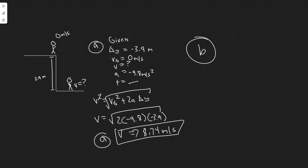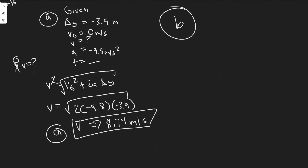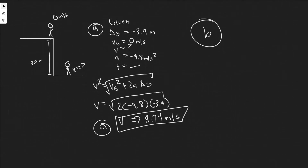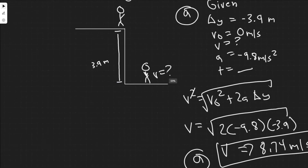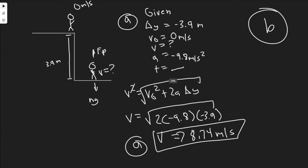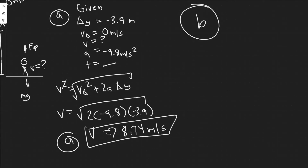Now let's move on to Part B, which asks us to find the average force exerted on his torso by his legs during deceleration. The first thing we want to do is draw the free body diagram of what's going on. We have the force F_P, which is the force pushing upward from the legs, and then we also have the force due to gravity, which is mg. These are your two forces. The sum of forces in the y-direction equals ma.